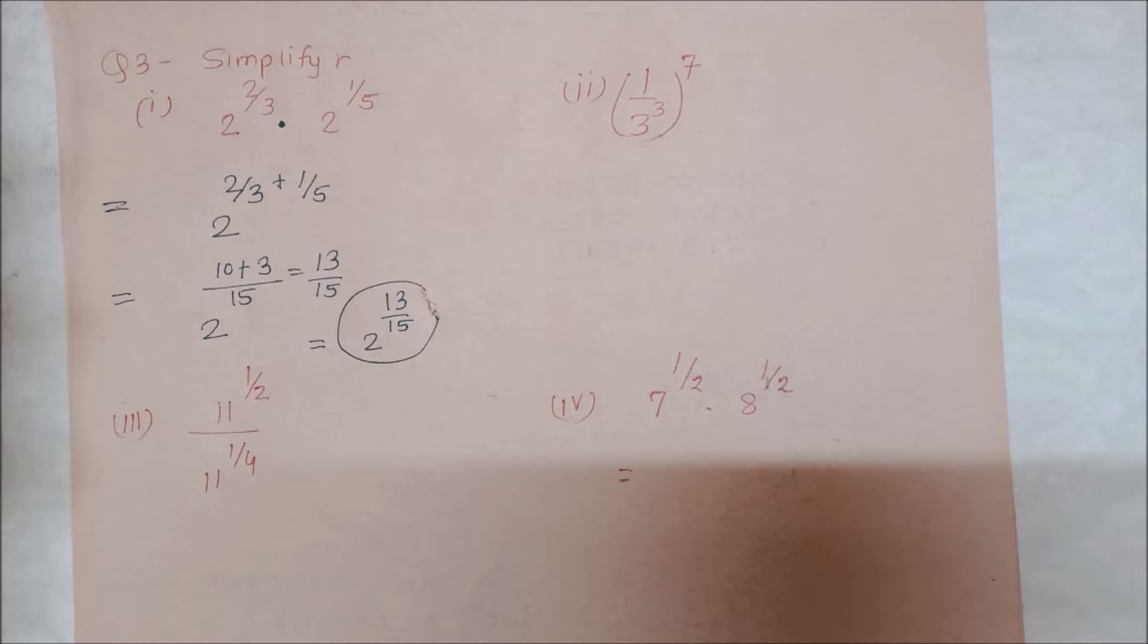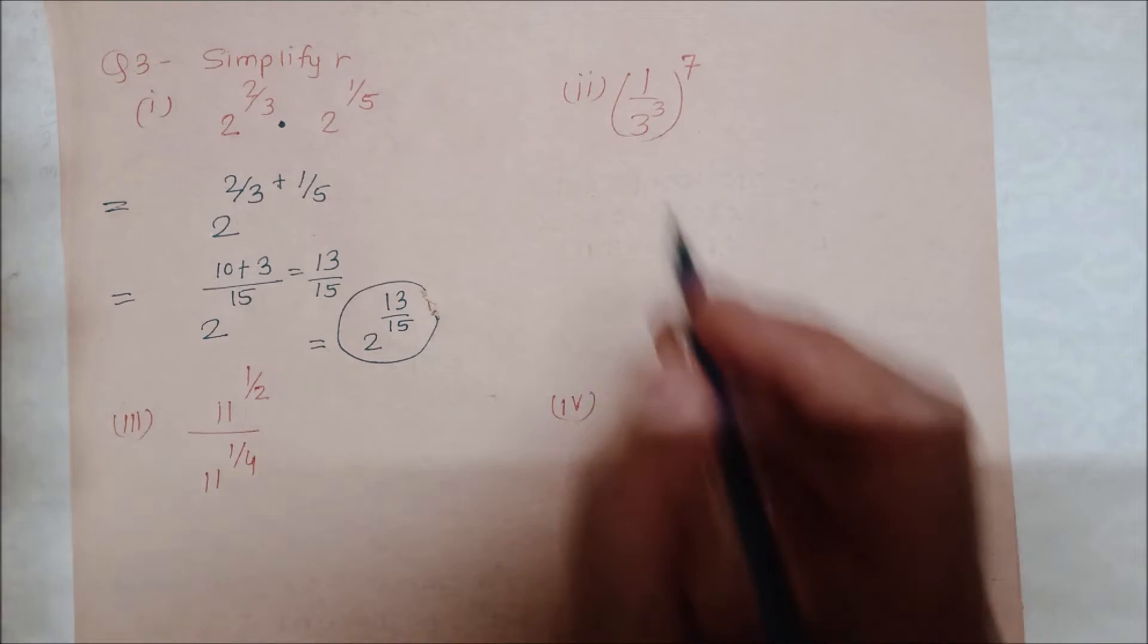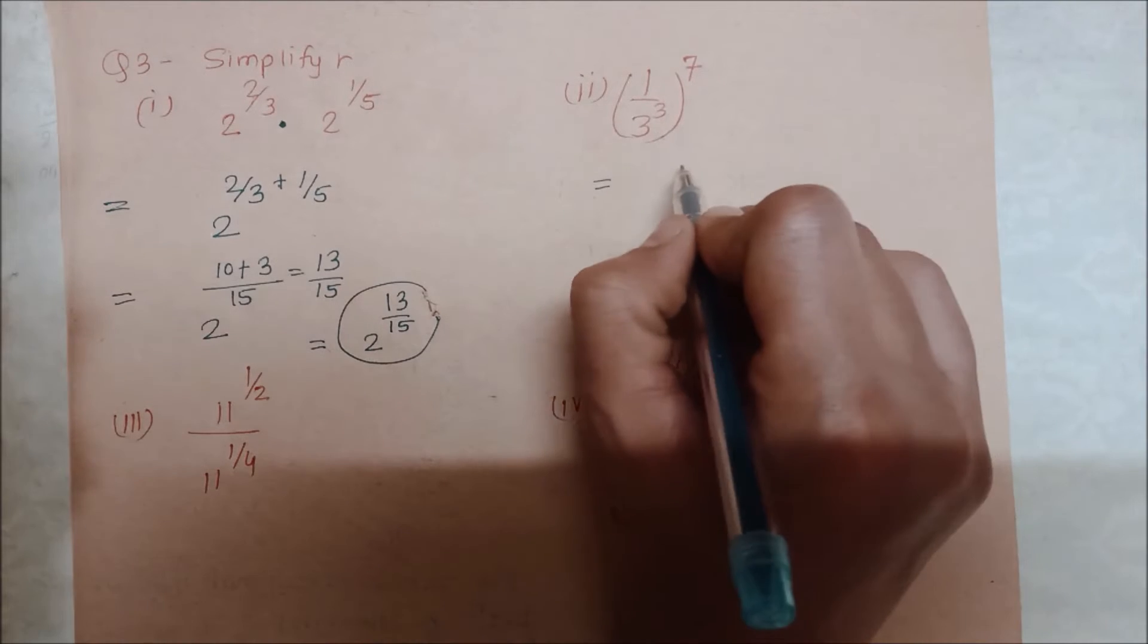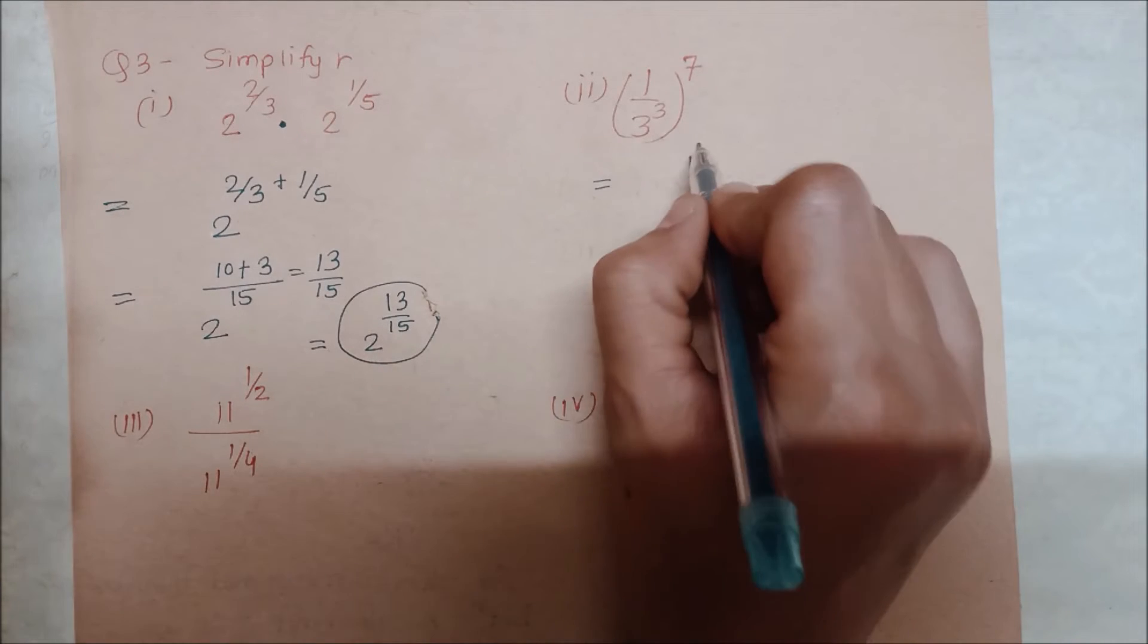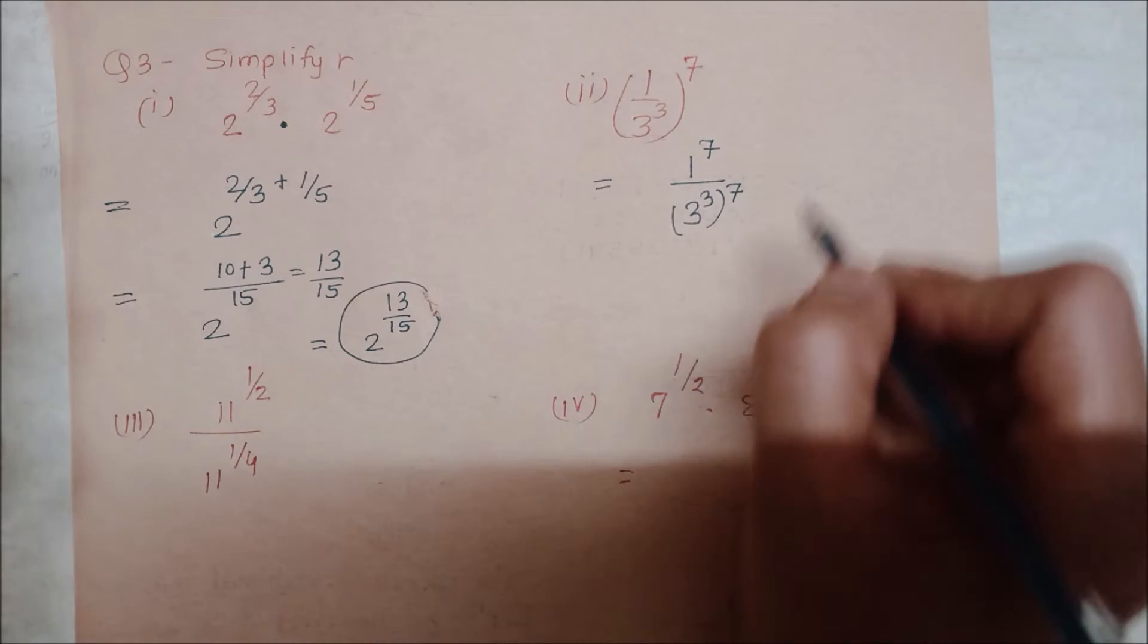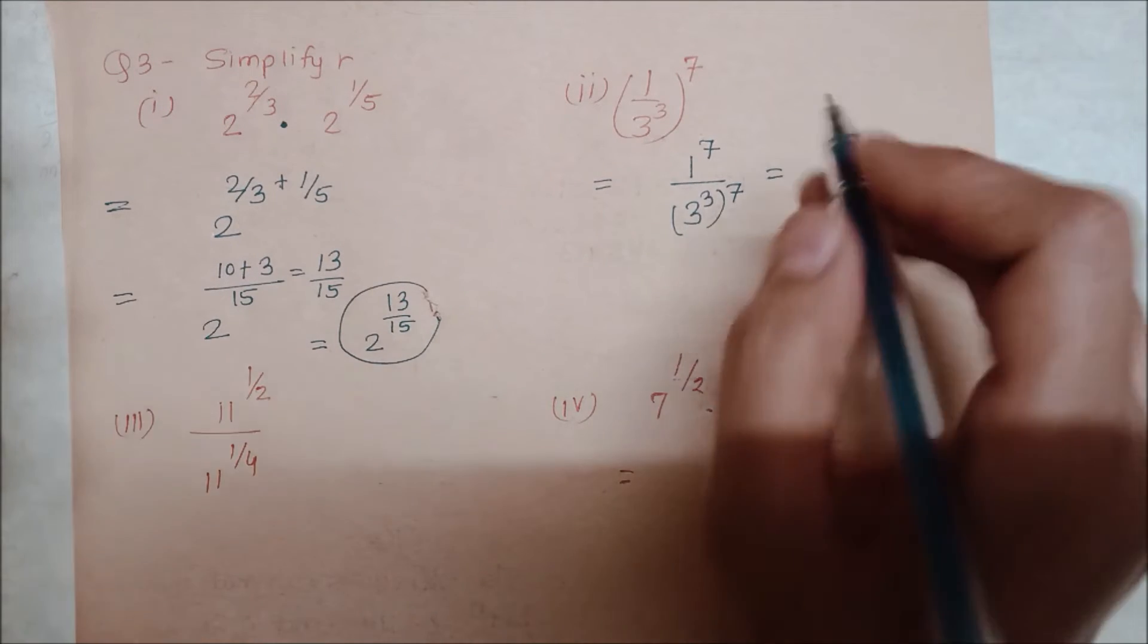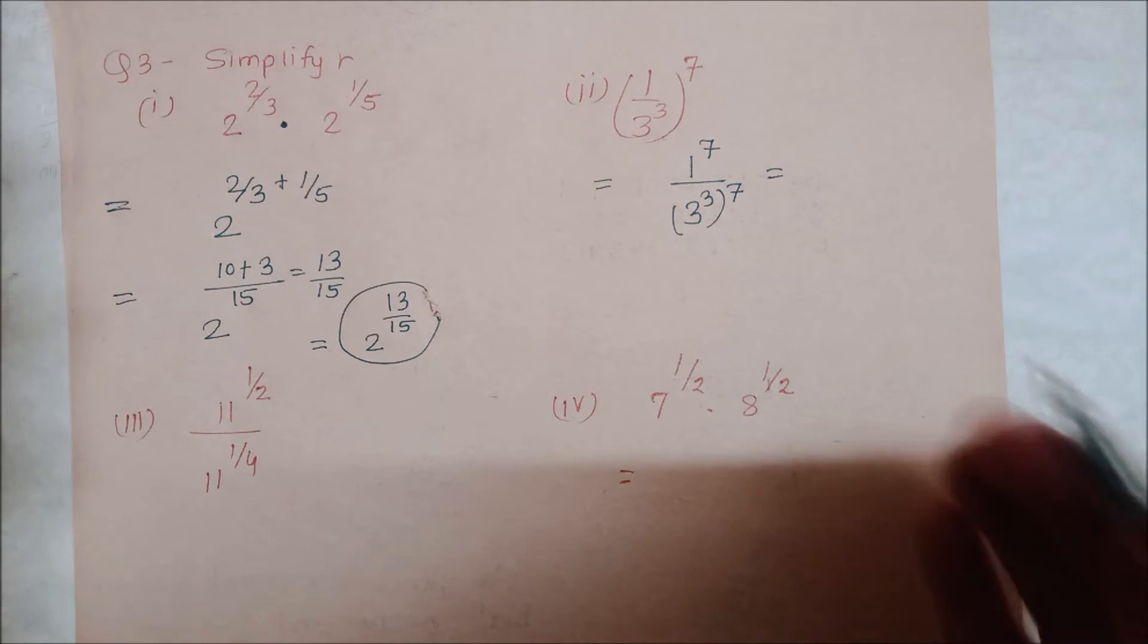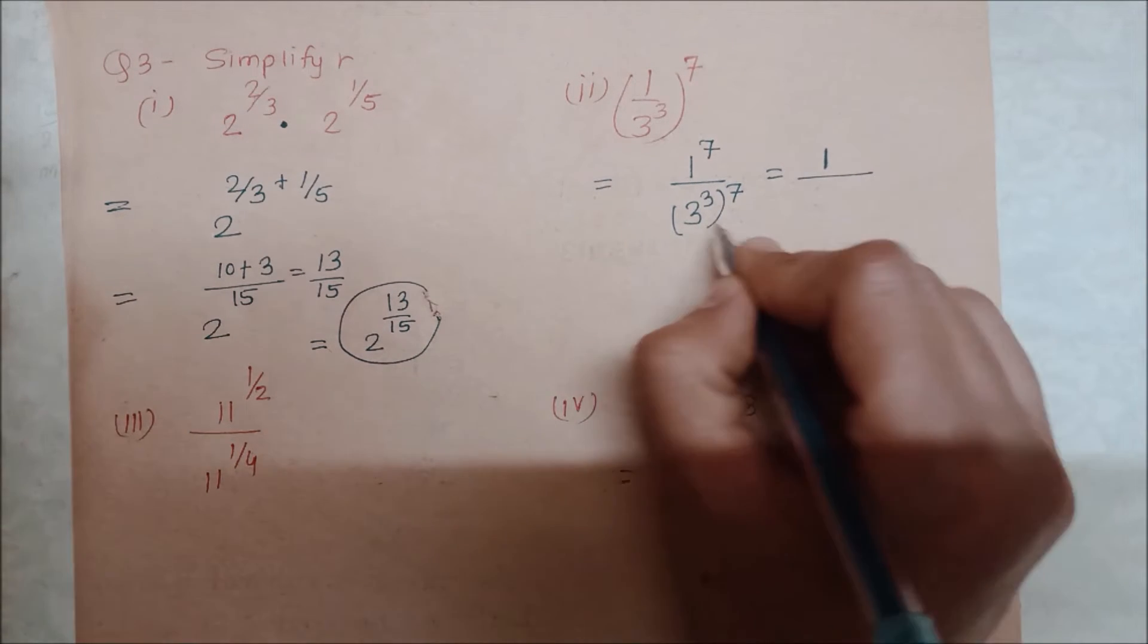Next, 1 upon 3 raised to power 3, and this whole thing to the power of 7. So what will we do here? 1 to the power of 7, and 3 to the power of 3, and then to the power of 7.